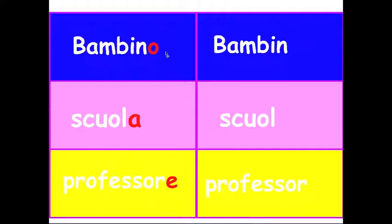So if you have a word ending in O, usually the plural is I. So bambino, bambini. Scuola, feminine word, scuole. E, professore, professori. This is how you make the plural: O becomes I, A becomes E, E becomes I.